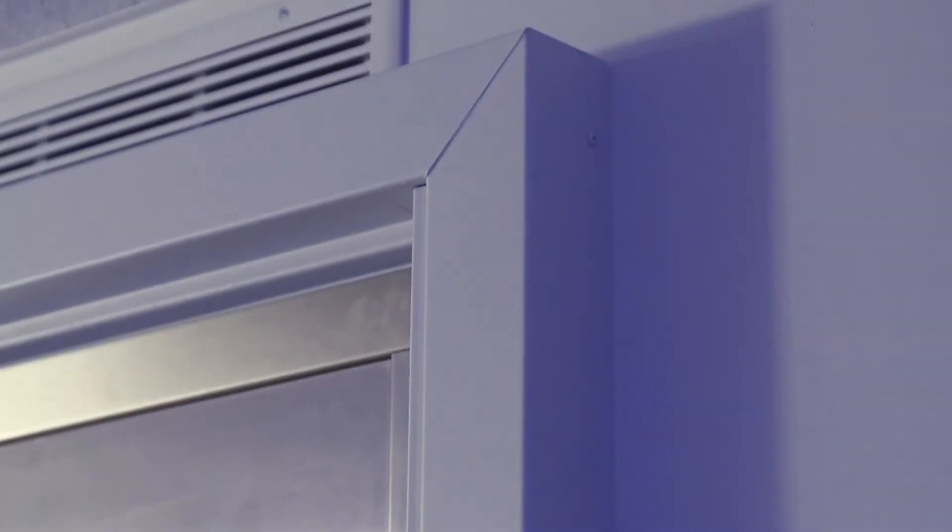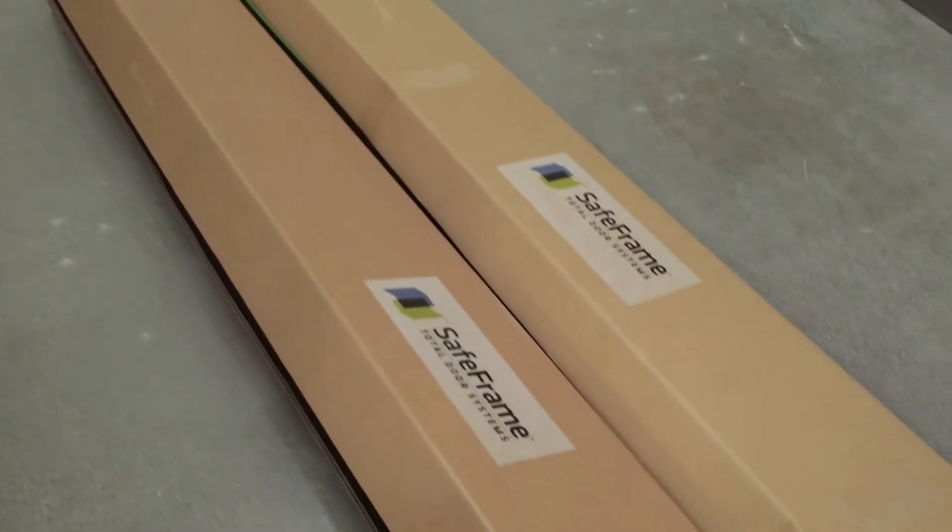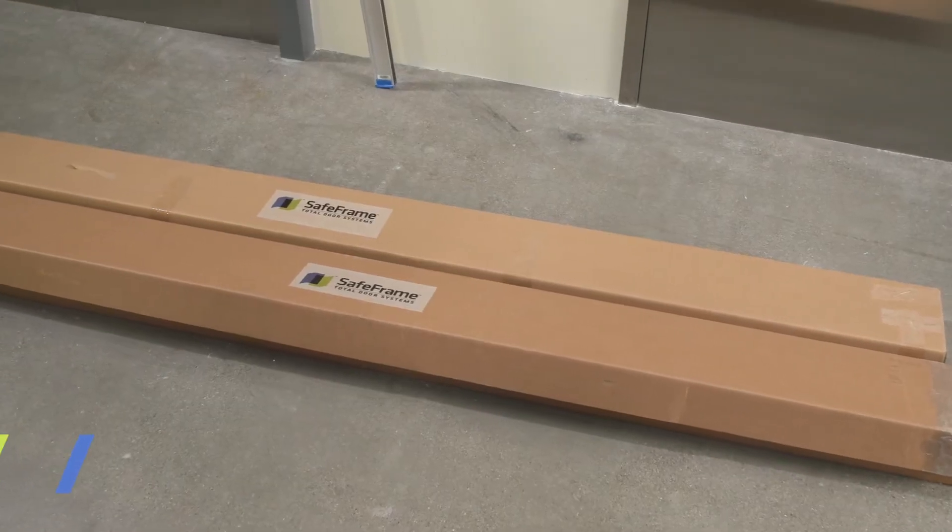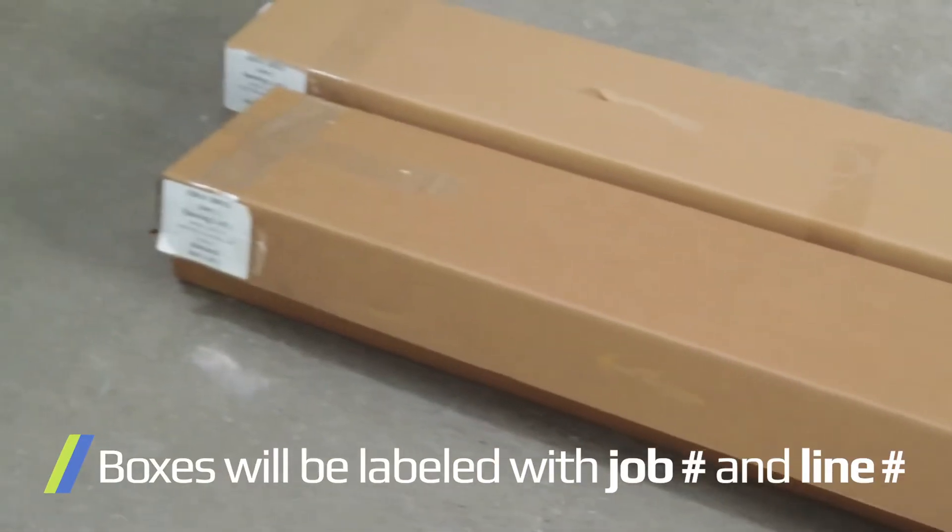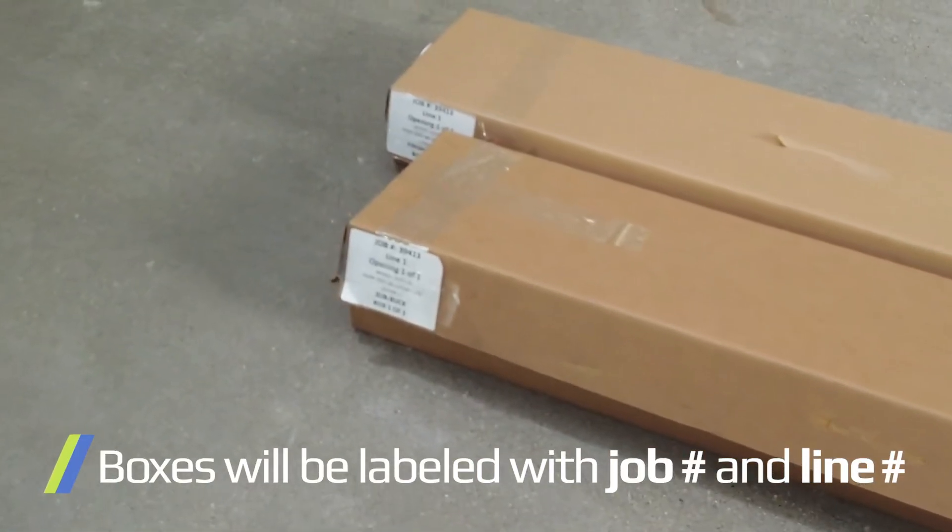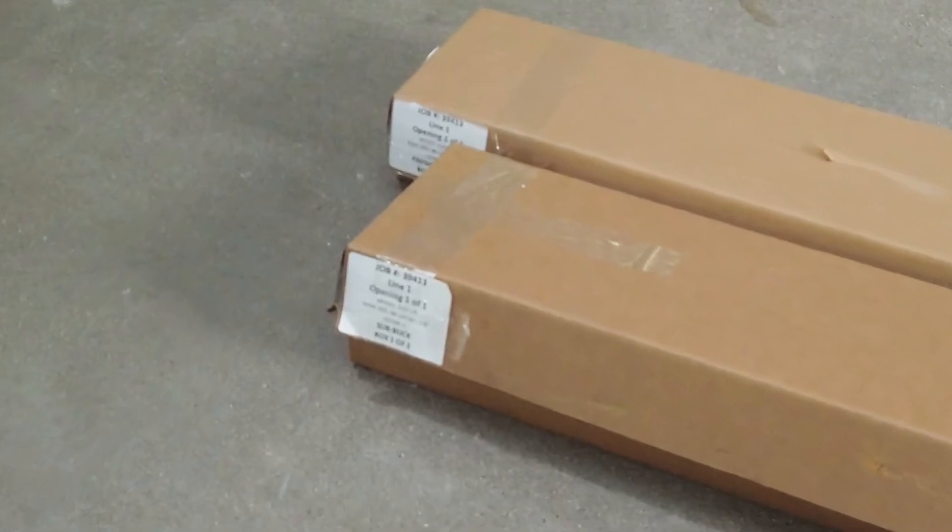Let's get started with the installation process for the frame. The frames are delivered with the doors and come in two long boxes. One box for the sub bucks and the other for the finish shell. Each box will be labeled with the job number and line number and denote whether it contains the finish shell or sub buck.